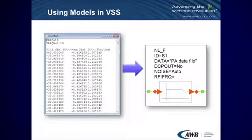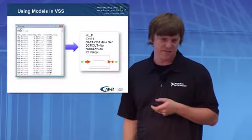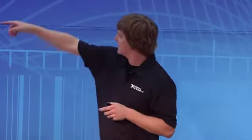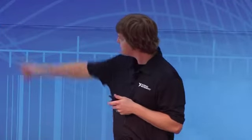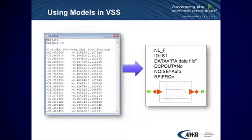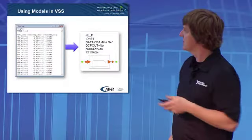In LabVIEW, we automate the signal generator and analyzer and collect that information. The standard file format has three columns: PIN on the left, output power in the middle, and output phase on the right. All of this data fits very nicely into the VSS simulation tool, where we model it with NL_F — a nonlinear file-based model block. This block takes in S-parameters, AM to AM, AM to PM, and harmonics. In this case we're just using AM to AM and AM to PM, and the block simply points to the appropriate file and behaves like whatever that data represents — in this case, an amplifier.